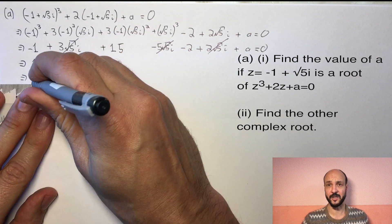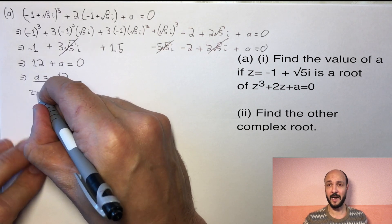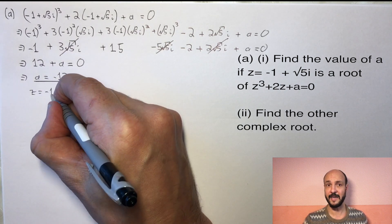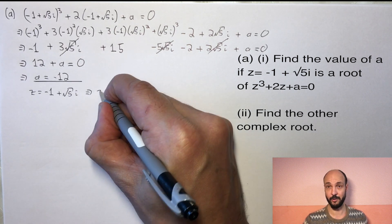Then there was a last bit to the question, which asked us for the other imaginary root. Well if -1 + √5i is a root, then the conjugate -1 - √5i is also a root.